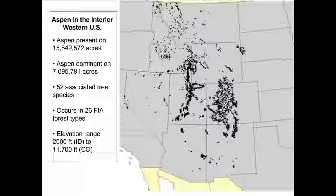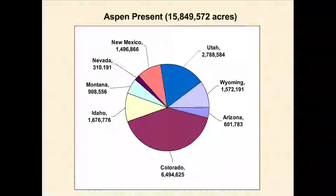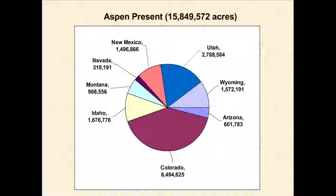These are all the plot visits where we've had some Aspen show up — around 4,300 of them right now. More will show up in Idaho and Montana as we get further into the annual inventory. Aspen is present on about 16 million acres. What we call the Aspen type is about 7 million acres in the interior west states. There are 52 associated species — everything from pinyon-juniper up to spruce and fir — and it occurs in 26 different FIA forest types. It ranges from 2,000 feet in Idaho to 11,700 feet in Colorado.